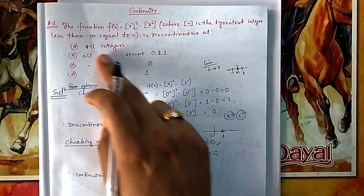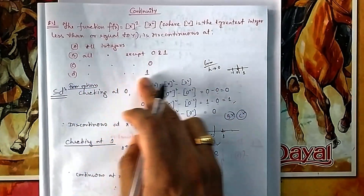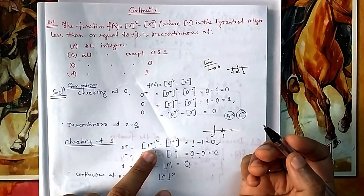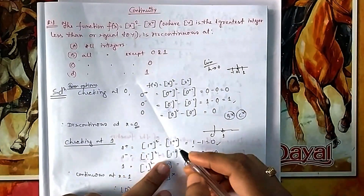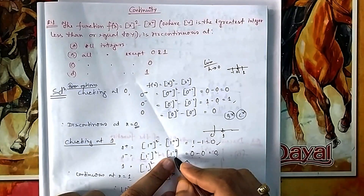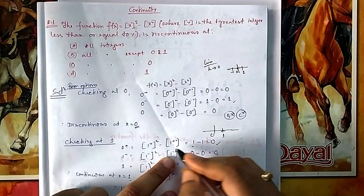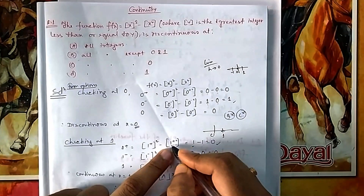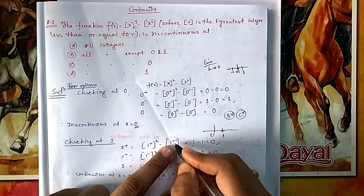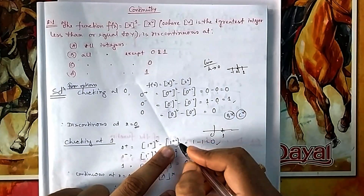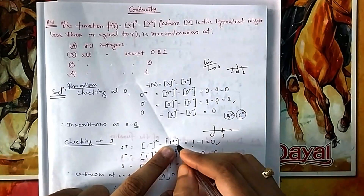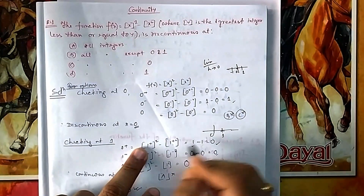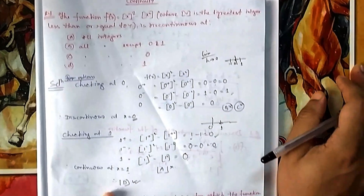Therefore option A ('discontinuous at all integers') is wrong. The function is discontinuous at all integers except 1. You can verify with x = 2: [2+]² = 4 but [(2.001)²] = [4.004] = 4, while [2−]² = 1 and [0.99²] gives a different value, confirming discontinuity at 2. So the answer is option D.